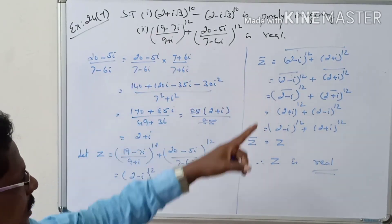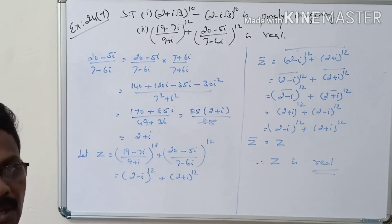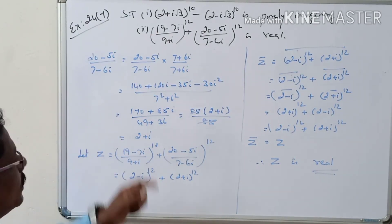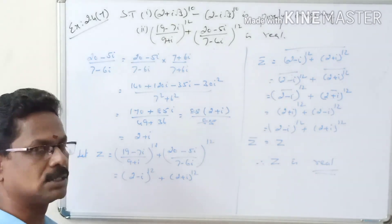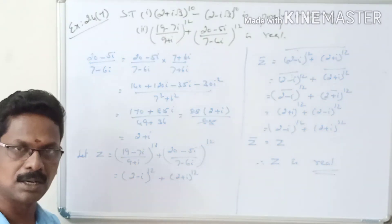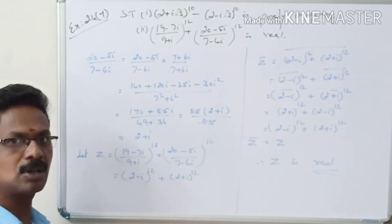So the first part is purely imaginary, and the second part is real. That is Exercise 2.47. Study well. Subscribe to Mercurymas.